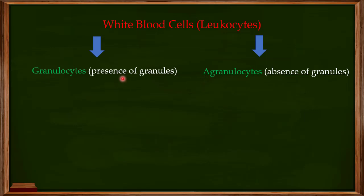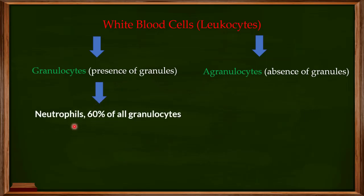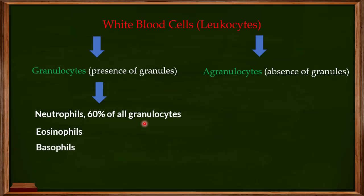The major types of granulocytes include the neutrophils, which make up about 60 percent of all granulocytes in your blood system, the eosinophils, which are the second type, and the third important type known as the basophils.